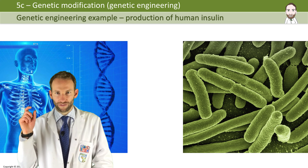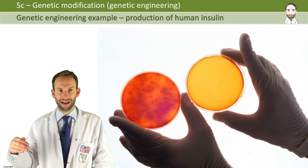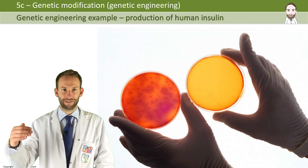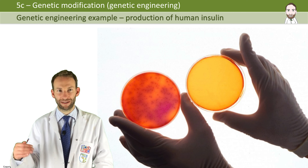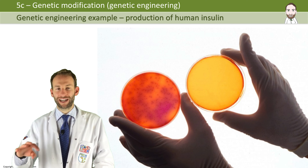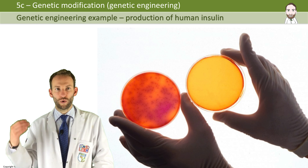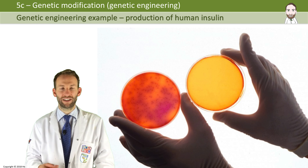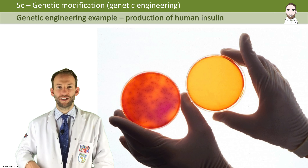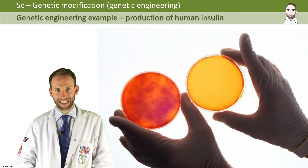The great thing is that once you've done it once, the bacteria will reproduce millions of times and pass on that gene every time, because it reproduces asexually. Very quickly you can get a population of billions of bacteria all making human insulin in a little factory for us via genetic modification.